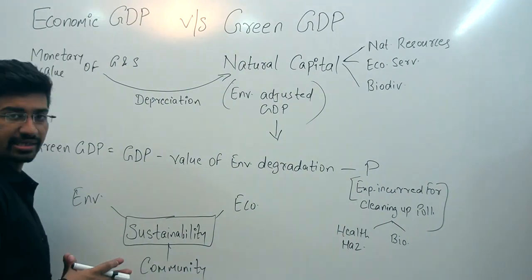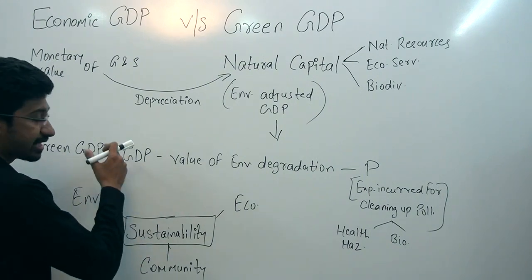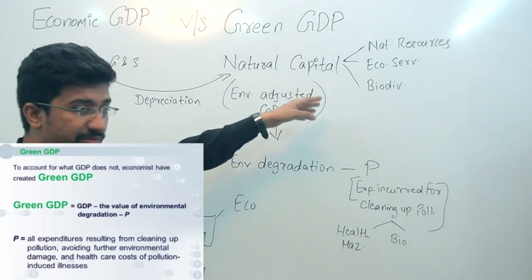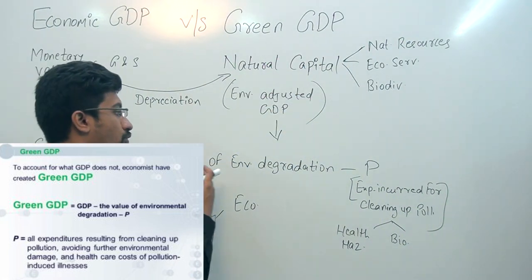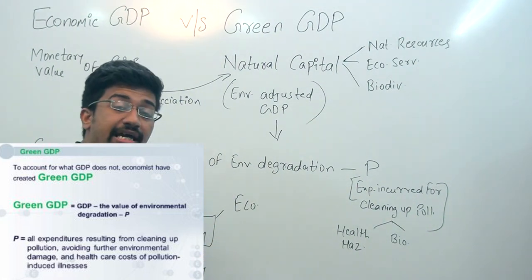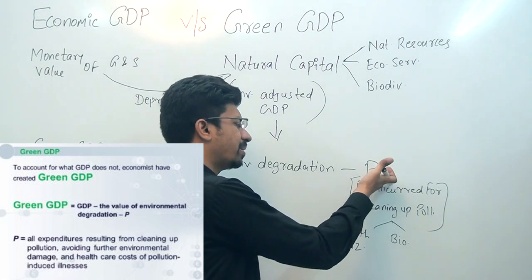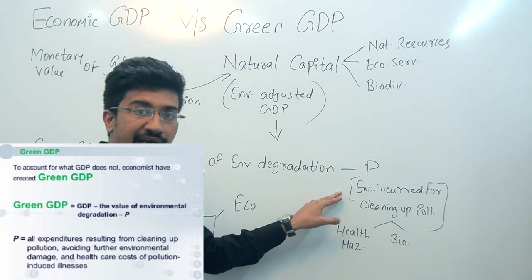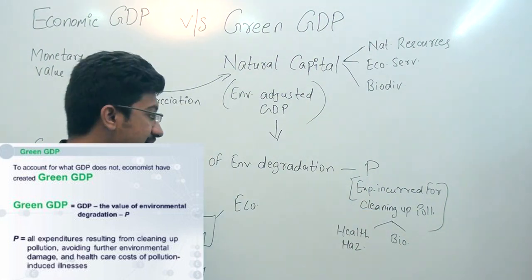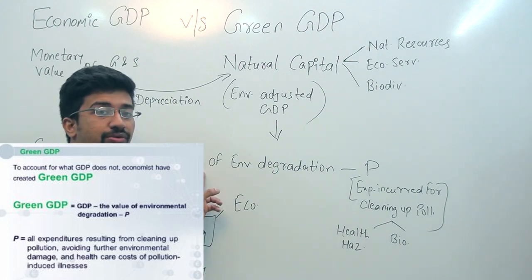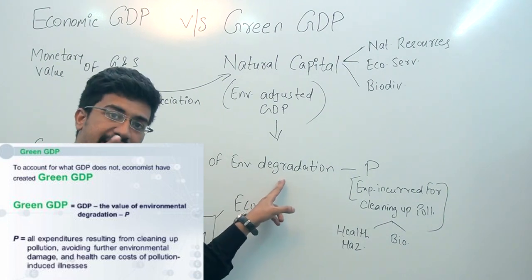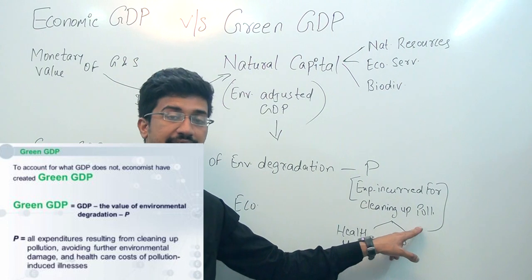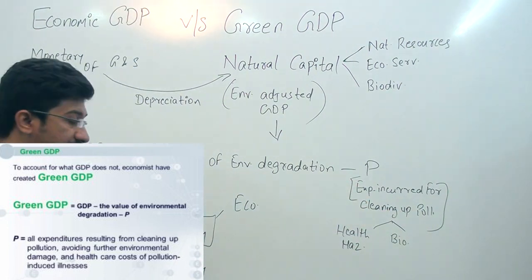Green GDP is calculated by taking conventional GDP and subtracting the value of environmental degradation. You also subtract the expenditure incurred for cleaning up pollution. So: Green GDP = GDP minus the value of environmental degradation minus the expenditure to reduce pollution.